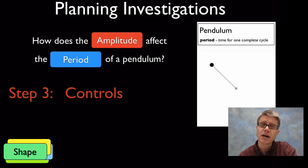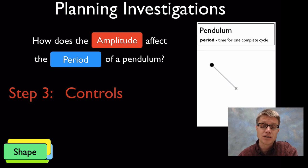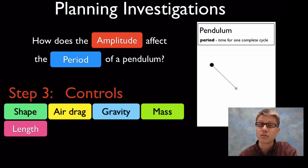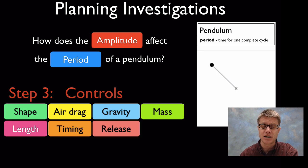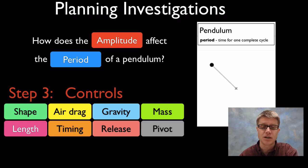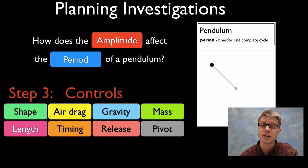Now I can use those two variables — amplitude and period — to refine my question. In a good scientific investigation we really only want to vary one thing and measure another. So amplitude will be my independent variable and period will be my dependent variable. All those other variables — shape, air, gravity, mass, length, timing method, release method, pivot point — now become controls: things I keep the same in the experiment. If you don't control everything else, you're just going to get bad data.